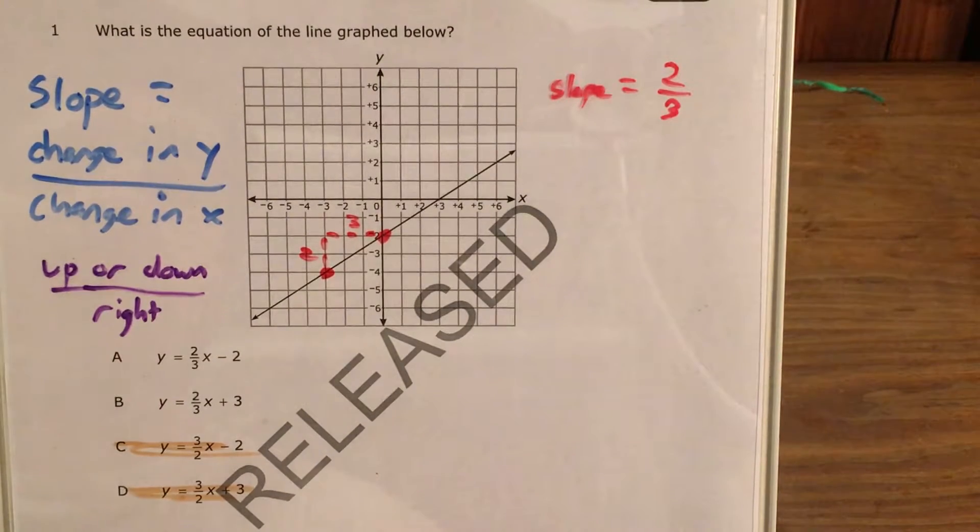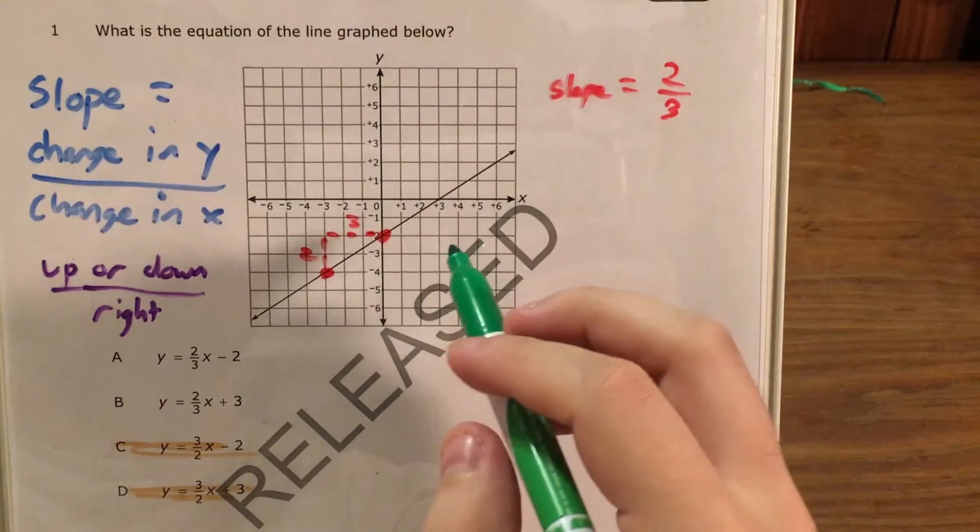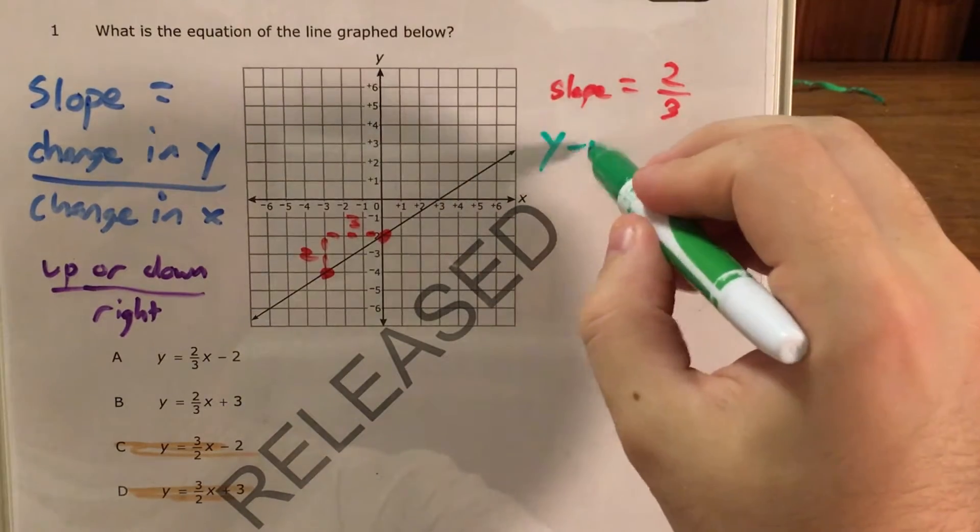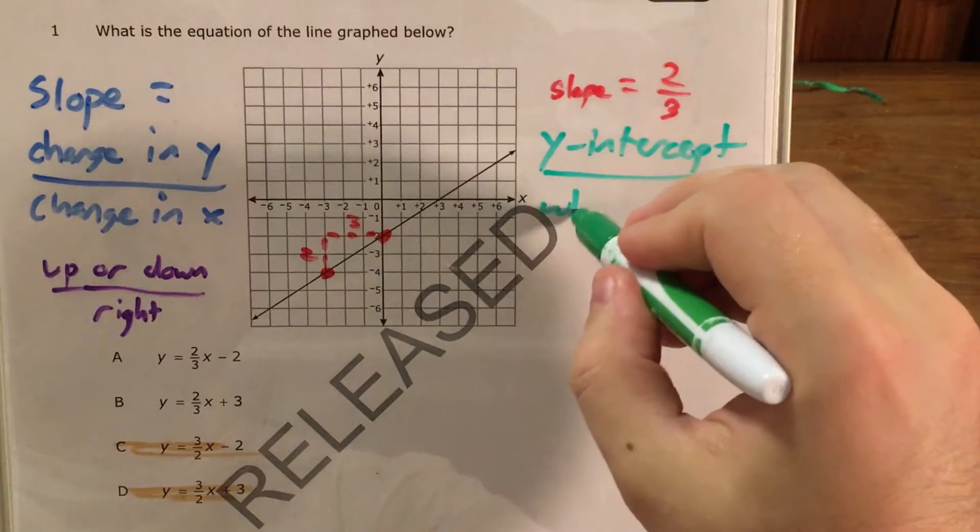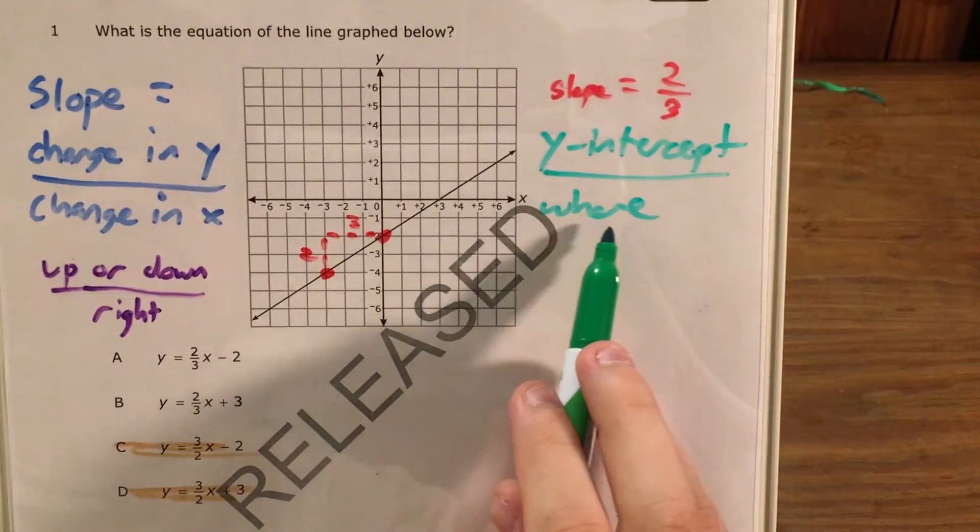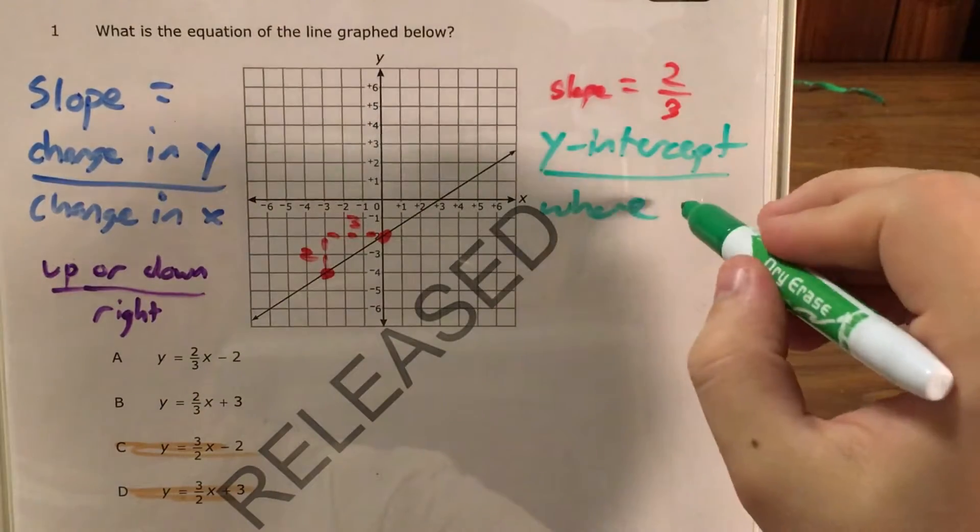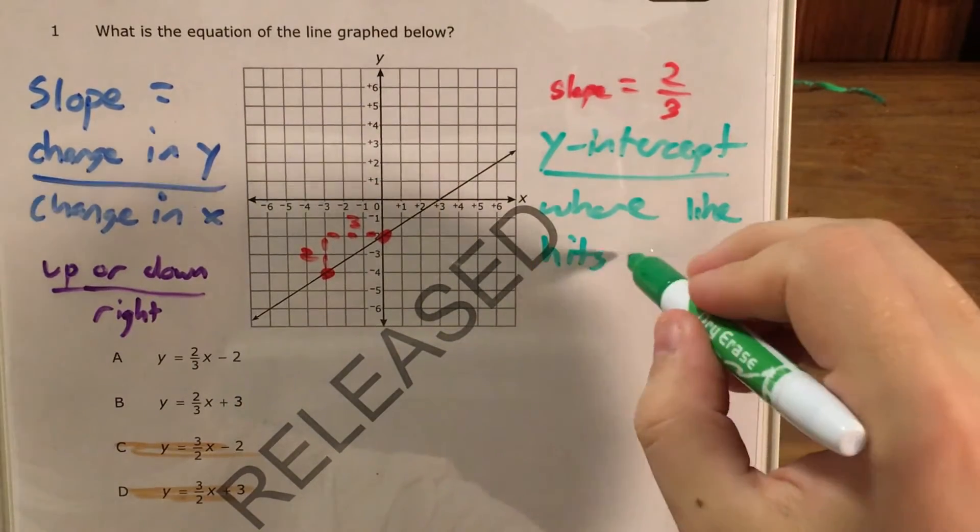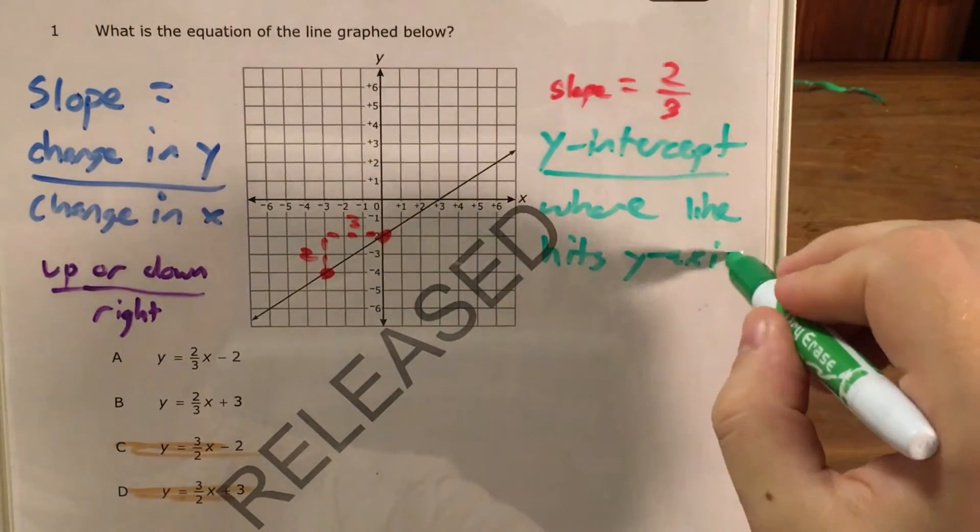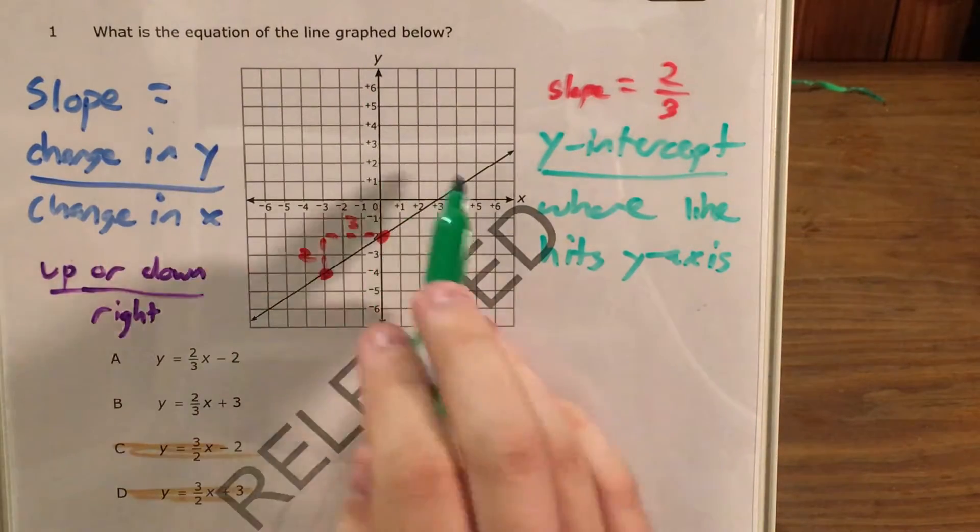So the next thing I have to find is called the y-intercept. And the idea of the y-intercept—it's essentially where my graph or my line is going to hit my y-axis, the vertical axis.